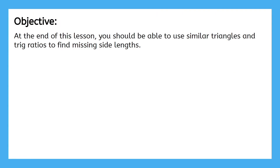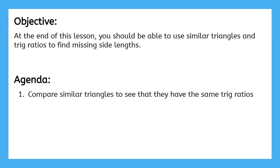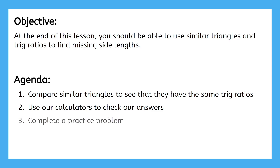By the end of this lesson, you should be able to use similar triangles and trig ratios to find missing side lengths. First, we'll compare similar triangles to see that they have the same trig ratios. Next, we'll use our calculators to check our answers. Finally, we'll complete a practice problem.